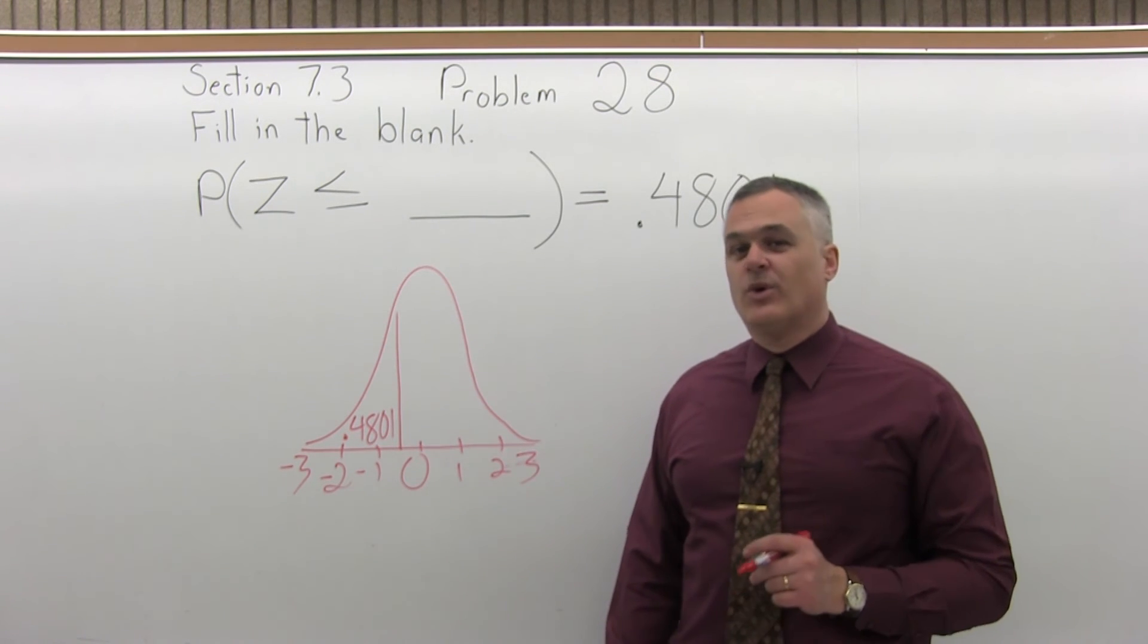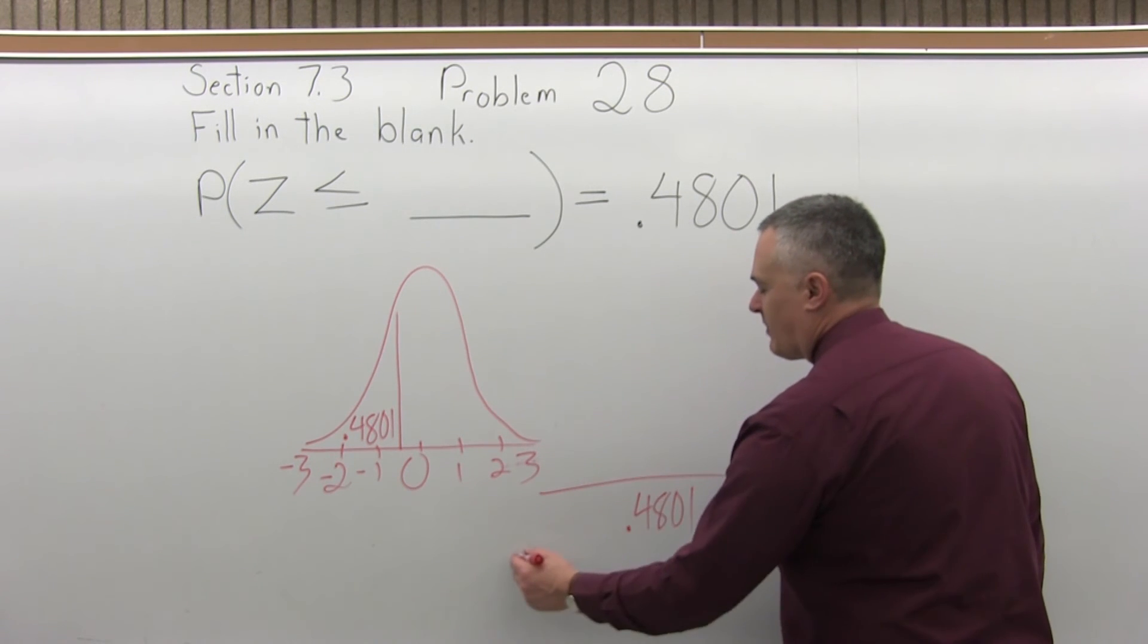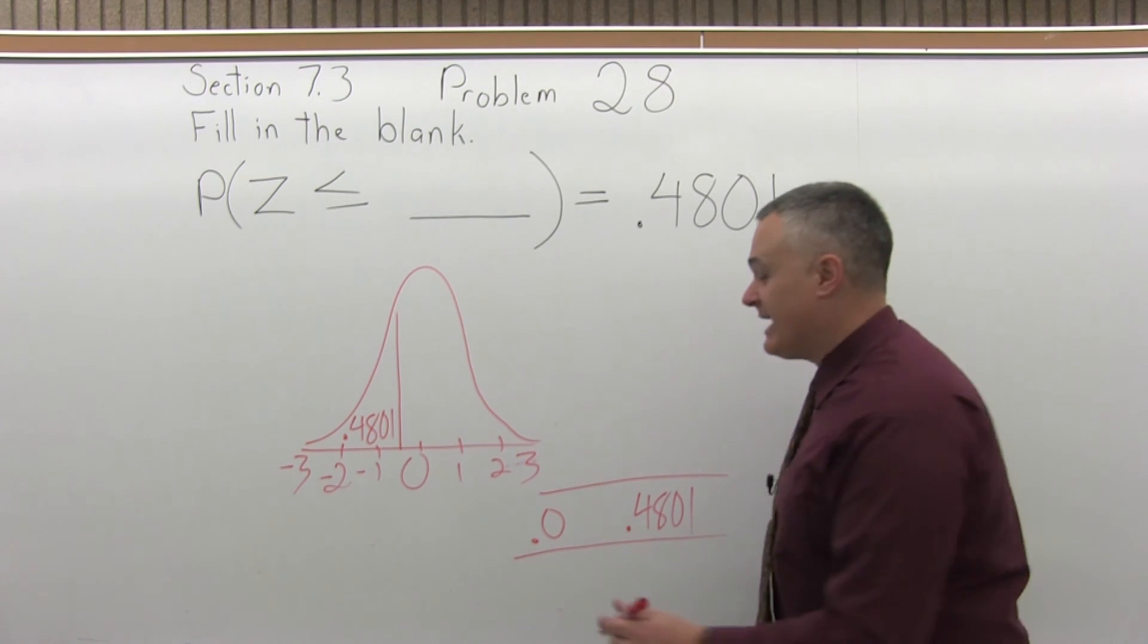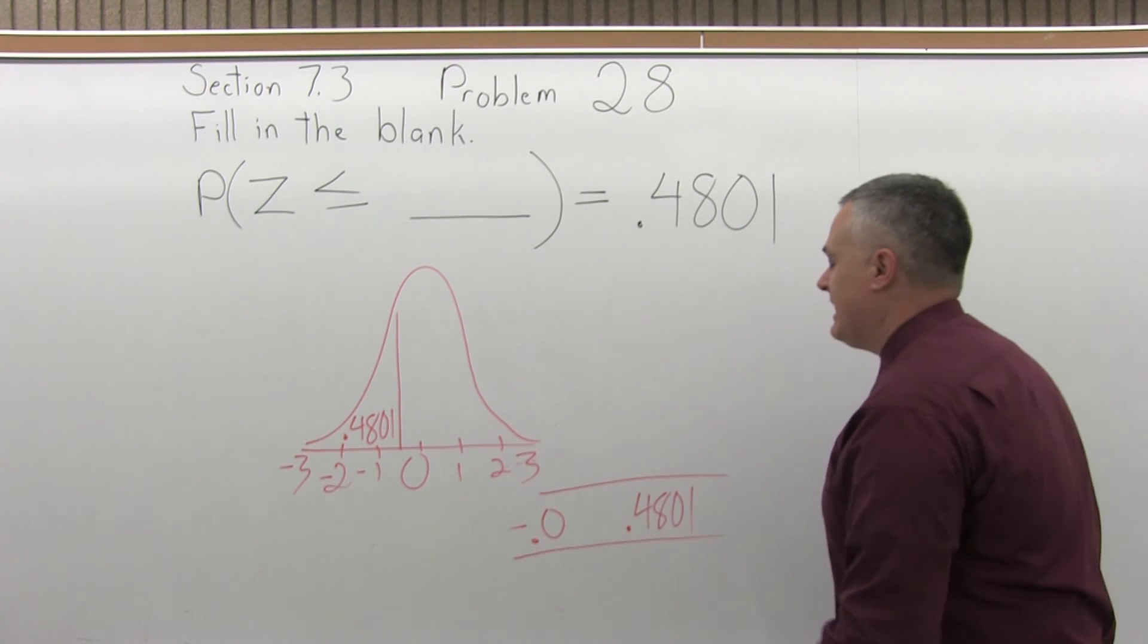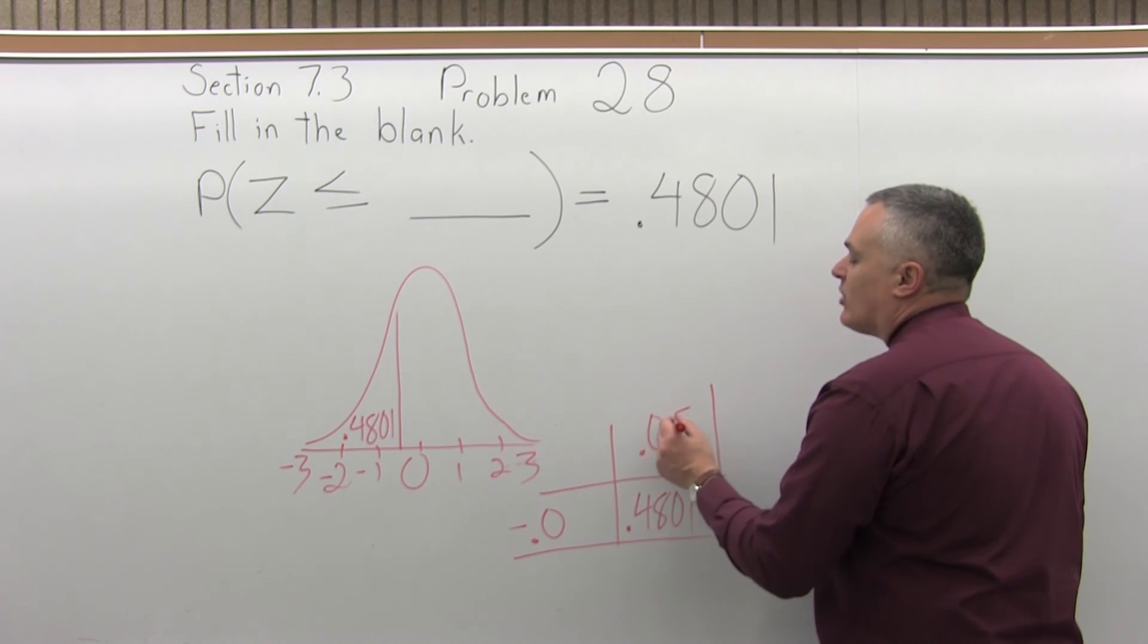When you do find it, it's on the very bottom row of the negative part of the chart. It's in the negative .0 row, and the column is the .05 column.